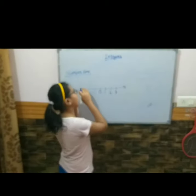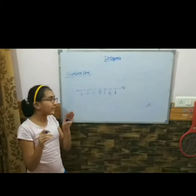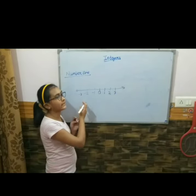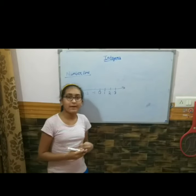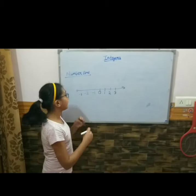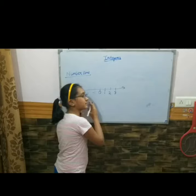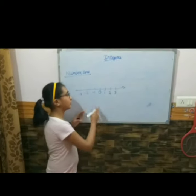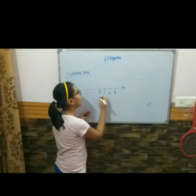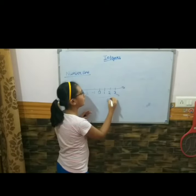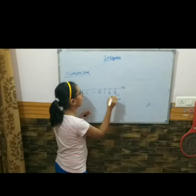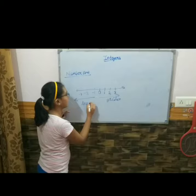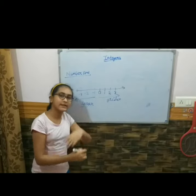Now let's move on to the number line. To the right of 0 are all positive numbers, and to the left of 0 are all negative numbers. As we move to the right, numbers are greater than 1 — they are ascending. As we move to the left, numbers become smaller — they are descending.